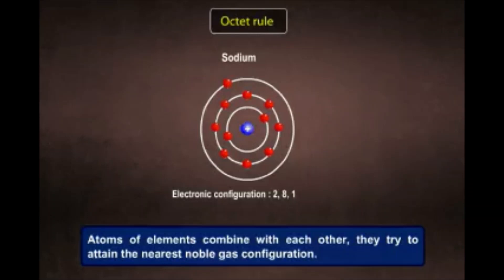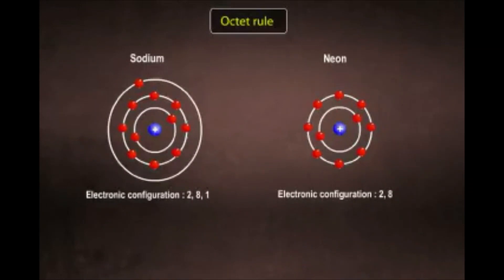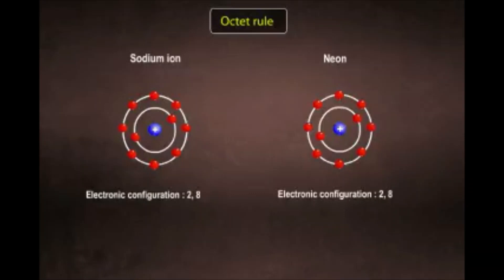In the process of combination, elements try to attain the configuration of a noble gas. In this case, if sodium has to attain the nearest noble gas configuration — which is neon — all sodium has to do is lose one electron. So sodium always combines with other atoms by losing one electron, for stability.